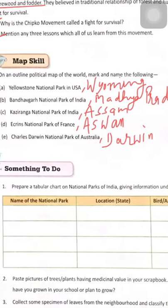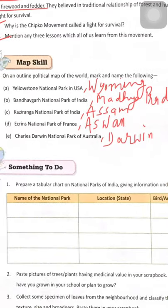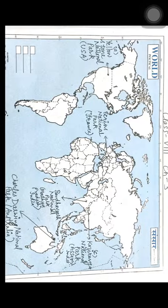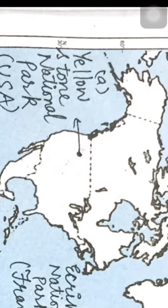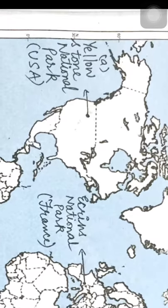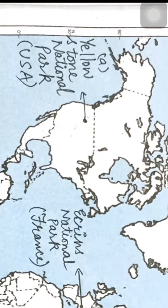For map skills, on the outline map of the world, mark and name the following. First: Yellowstone National Park in USA, located in North America. Mark the exact location as shown — your marks will be deducted if the location is wrong.